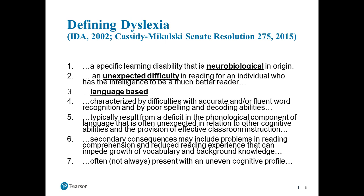Some secondary consequences oftentimes include difficulties with reading comprehension, although we do oftentimes see kids have decent comprehension given their other abilities — for example, really well-developed listening comprehension. It's often, not always, present with an uneven cognitive profile. We oftentimes see peaks and valleys in kids' profiles with regard to their skills over time.